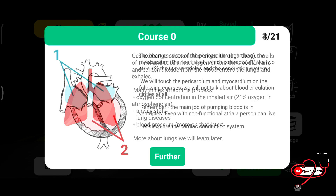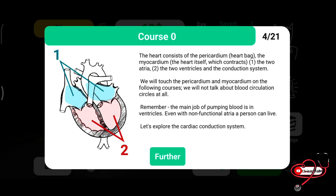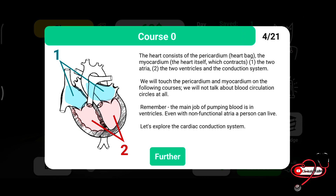Let's discuss the heart. You can see numbering 1 and 2. Number 1 is the two atria, shown in light blue, and number 2 is the two ventricles, shown in red. The main function of the ventricles is pumping the blood. Even with non-functional atria, the patient can be alive. If ventricles are intact, the patient can survive.